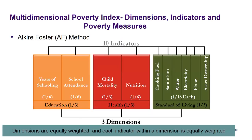So we have two indicators under education, two under health, and six under standard of living, making a total of 10 indicators. Within the MPI, each dimension has an equal weight. With three dimensions, each dimension is one third. So education has a weight of one third, health one third, and standard of living one third — they are equally weighted.